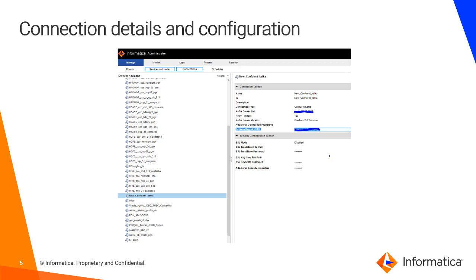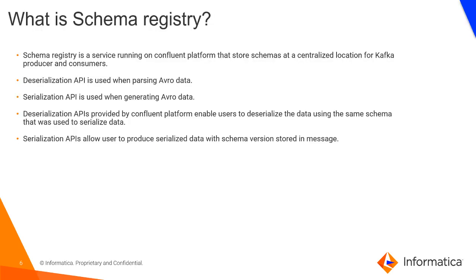Once the connection is created, you will be ready to import objects and run a mapping. Now let's understand what the schema registry is. The schema registry is a service running on the Confluent platform that stores schemas at a centralized location for Kafka producers and consumers. There is a deserialization API used when parsing Avro data, and a serialization API used when generating Avro data.